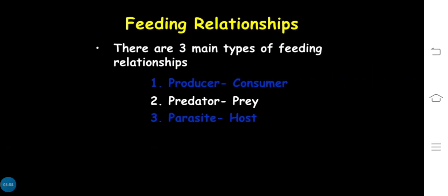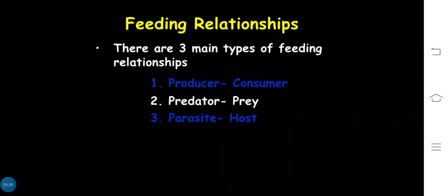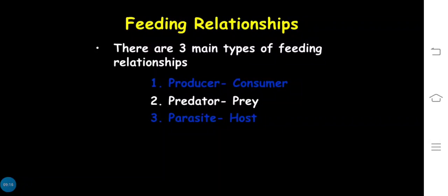Next is feeding relationships in an ecosystem. Feeding relations involve the transfer of energy from one organism to another. The key feeding relationships include: producer to consumer, predator to prey, and parasite to host.